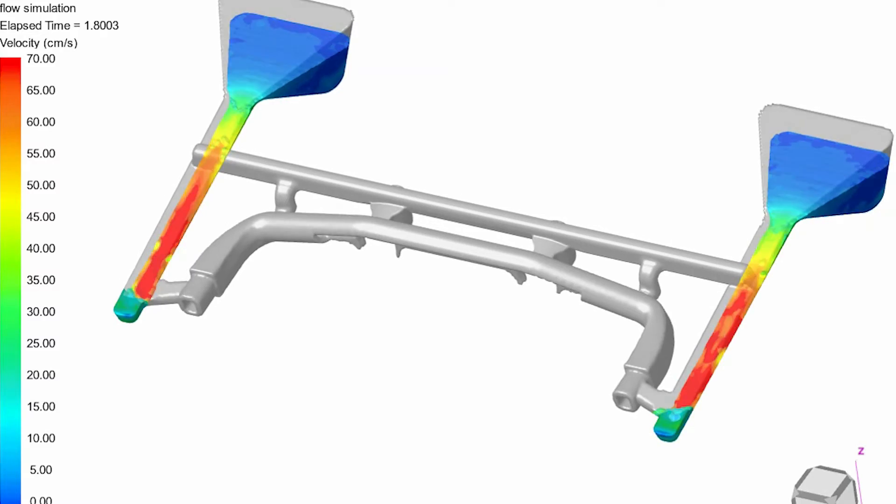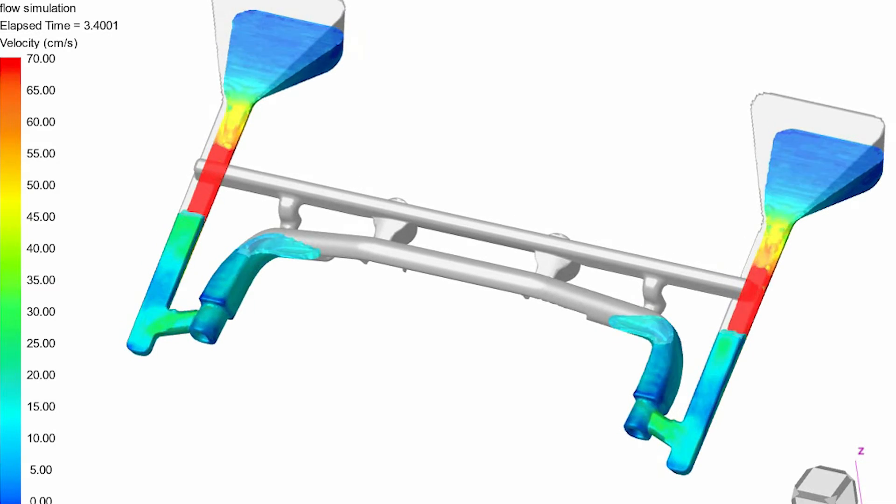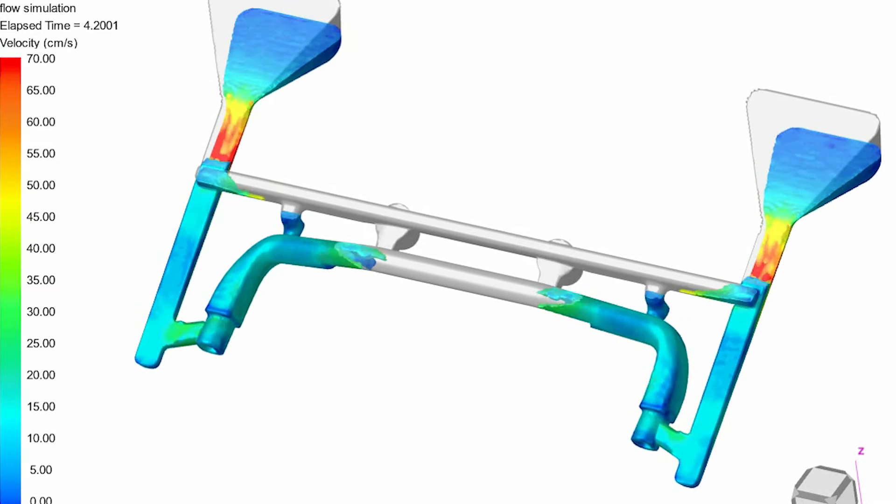Basically laying the part horizontal and then as you tilt it back, you have gates running down the sides of the part, and you're going to fill from the bottom to the top, creating the least amount of porosity.